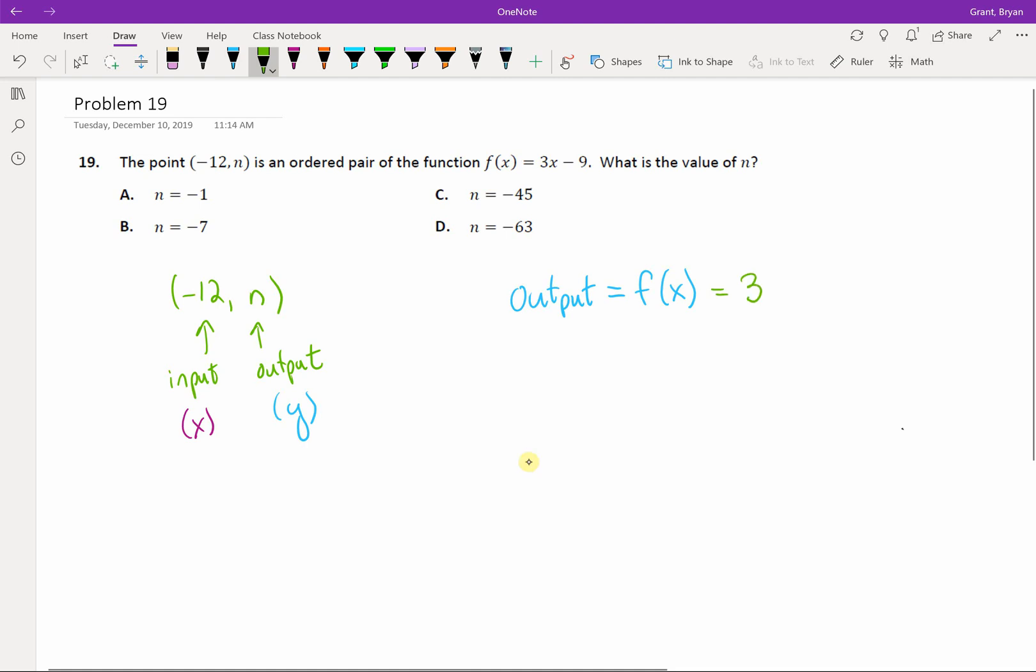Well, the formula that involves x says take your x, multiply by 3, and subtract 9. So, when they say that negative 12 is the input, what is the value of n, what's the value of the output?